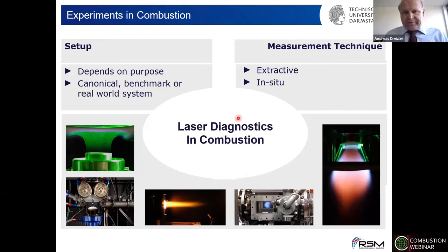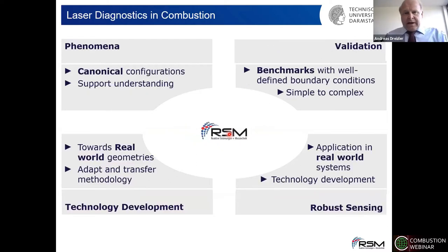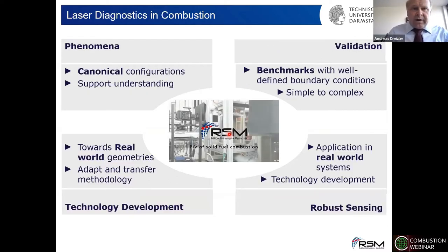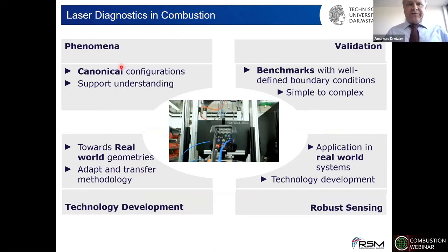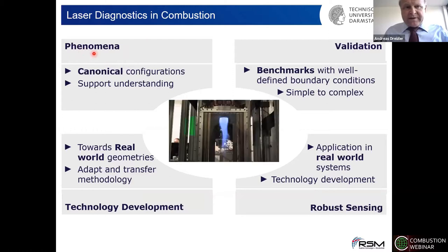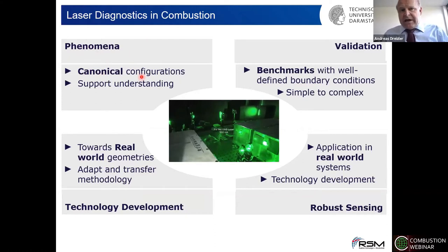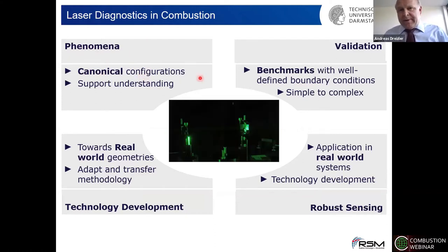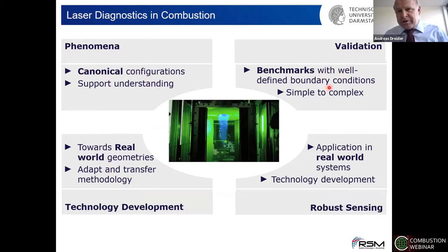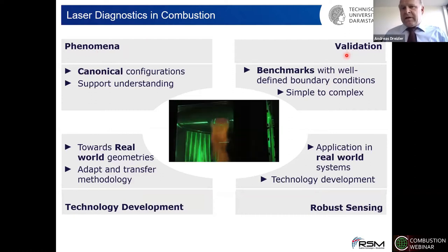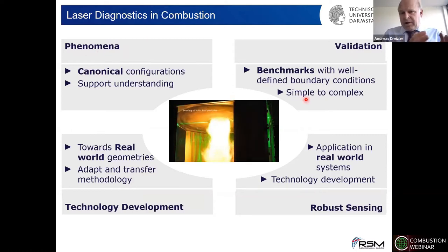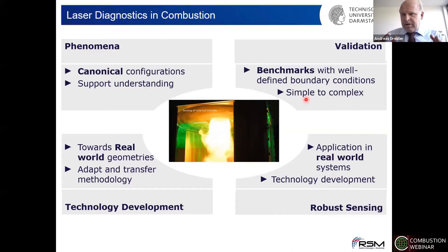Focusing on in situ measurements, if you dig into where these techniques can be applied, we can distinguish four areas. One area is about understanding phenomena, typically working with canonical configurations. Those can be transferred into benchmark systems where you control boundary conditions to perform validation experiments to support numerical models. Here my strategy is to go from simple to complex — design the benchmark experiment as simple as possible to really extract the phenomenon of interest. Sometimes you want to investigate interlinked processes like solid fuel combustion, where the benchmark already has a certain level of complexity.